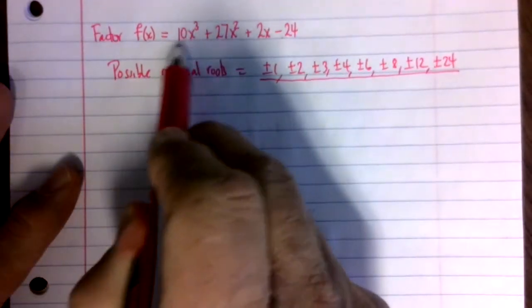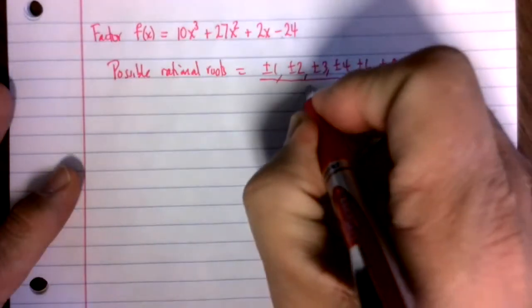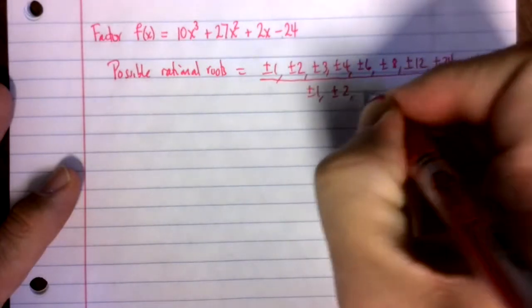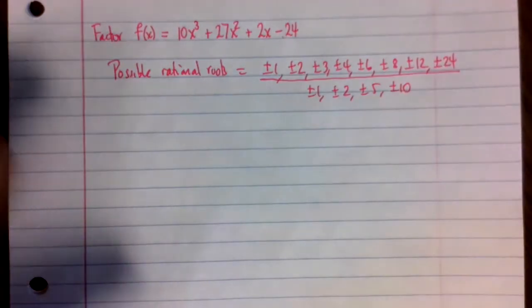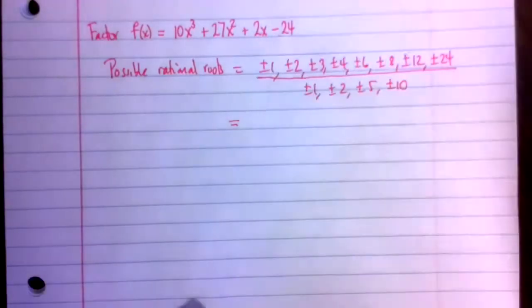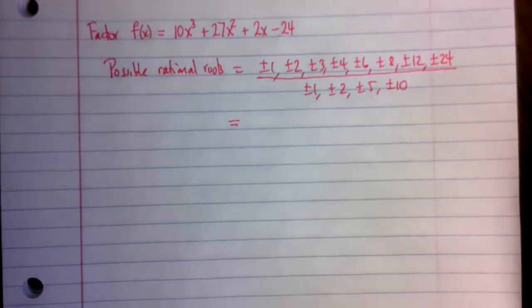And then the denominator will be things that go into the leading coefficient. So plus or minus 1, plus or minus 2, plus or minus 5, and plus or minus 10. This gives us a big list of possible rational roots.